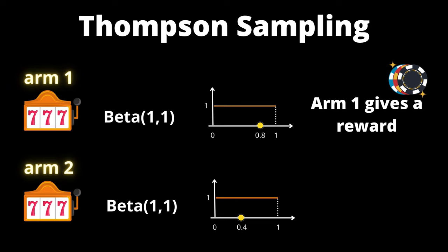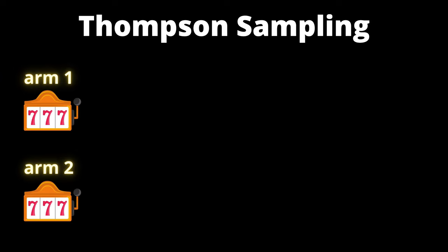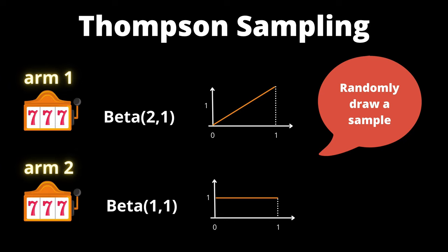At time step 2, again, let's randomly draw a sample from each distribution. As you can see from the new distribution, arm 1 has a higher chance of drawing higher numbers. Arm 2 has equal chances to draw any numbers.